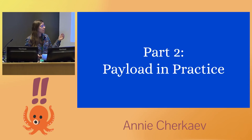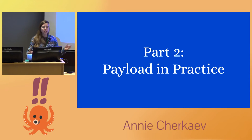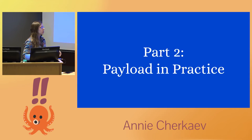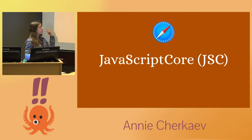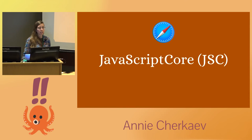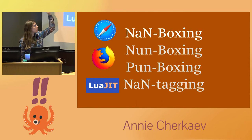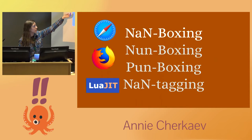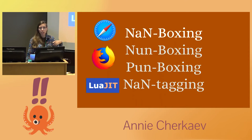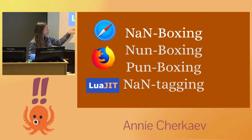Well, yes, they do. In fact, I tried to find any use cases for this when I learned about it, and this is the best use case I found. It's in this JavaScript interpreter called JavaScriptCore, which is at the heart of Safari, and it's this technique called NaN boxing. This technique isn't unique to JavaScriptCore — the JavaScript interpreter inside Firefox called SpiderMonkey uses two variants under the names NaN boxing and pun boxing, and LuaJIT also uses it under the name NaN tagging.